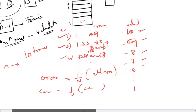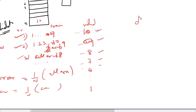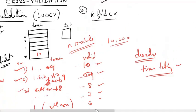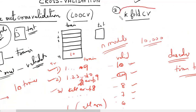However, LOOCV suffers from one big disadvantage, which is probably why it is not used in industry: it takes a long time to run. It is time-consuming because you are running n models in total. If you have 10,000 rows, you would be running 10,000 iterations of the same model, which obviously takes a lot of time. This is the only but significant disadvantage of Leave-One-Out Cross Validation.